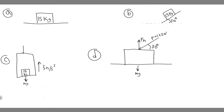In this problem, we're told to calculate the magnitude of the normal force on a 15-kilogram block in four circumstances: A, the block is resting on a level surface; B, on a surface tilted up at a 30-degree angle; C, on the floor of an elevator accelerating upwards at 3 meters per second squared; and D, on a level surface with a force of 125 newtons exerted at 30 degrees above the horizontal.